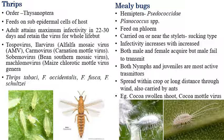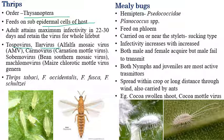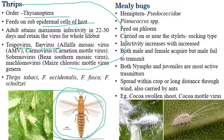Thrips belong to the order Thysanoptera, and feed on sub-epidermal cells of the host. Viruses transmitted by thrips include tospoviruses, ilarviruses such as alfalfa mosaic virus, carmovirus (carnation mottle virus), sobemovirus (southern bean mosaic virus), and maclomovirus (maize chlorotic mottle virus). Important species involved in transmission are Thrips tabaci, Frankliniella occidentalis, and Frankliniella fusca.